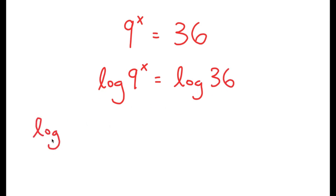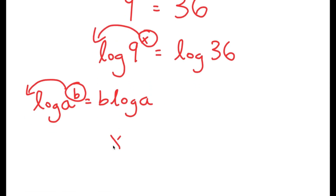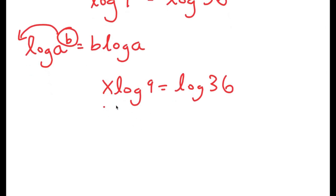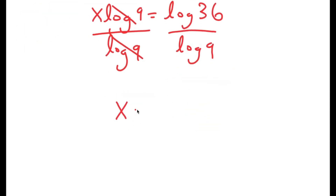If I have something in the form log a to the power of b, I can move this exponent of b to the front, so this turns into b times log a. In this case, I have log 9 to the power of x, and I can move x to the front, so I get x times log 9 is equal to log 36. From here, I can divide both sides by log 9, and I get x is equal to log 36 over log 9.